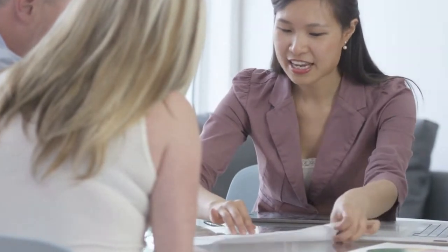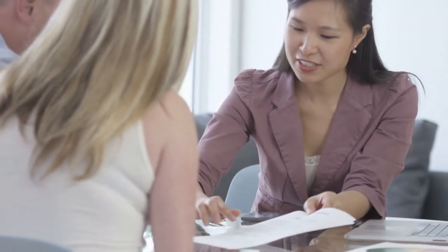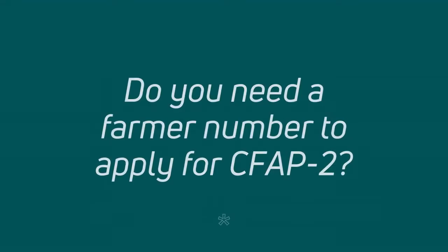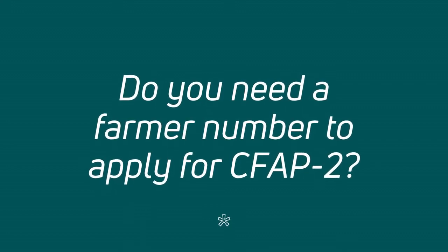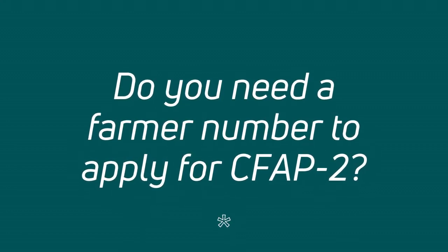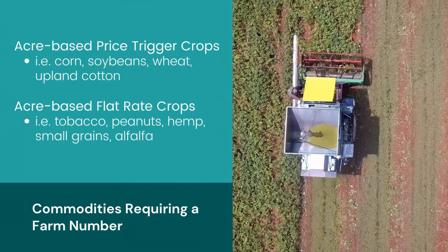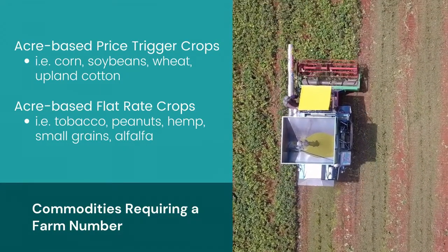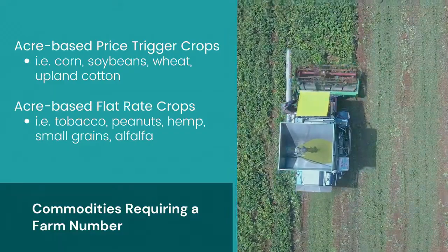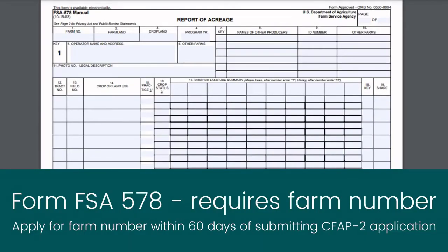For farmers who are new to FSA, your local county office is there to help you complete the right forms for your situation correctly and as easily as possible. You do not need a farm number in order to apply for CFAP II. However, some commodities that fall under the price trigger or flat rate categories require producers to submit a report of acreage form with their application. This form, FSA 578, requires a farm number. However, producers can work with their local county offices to submit their CFAP II application with the intent to sign up for a farm number within 60 days.